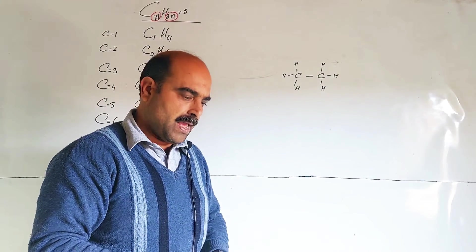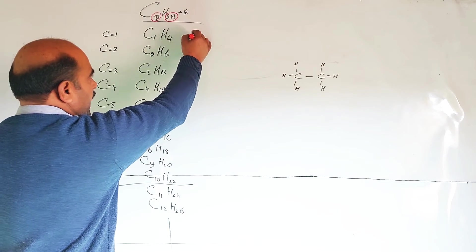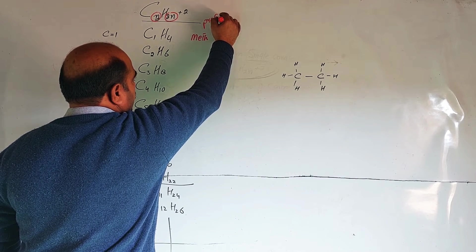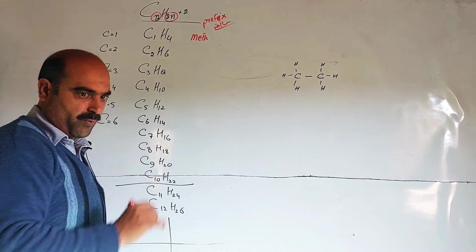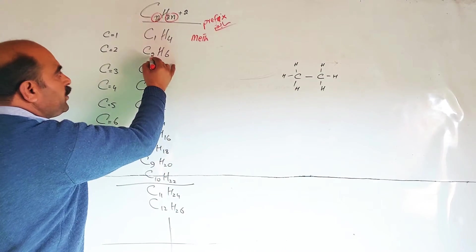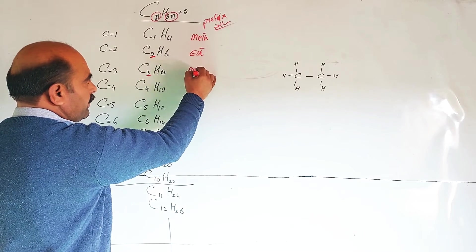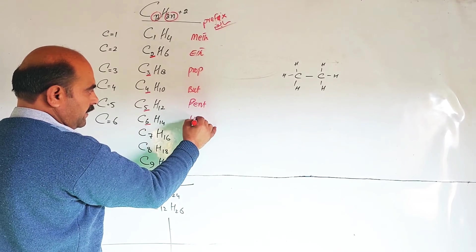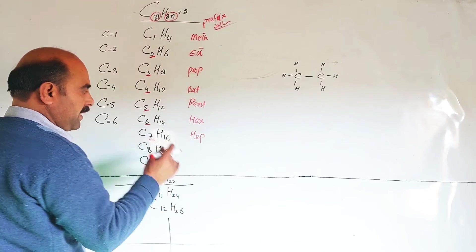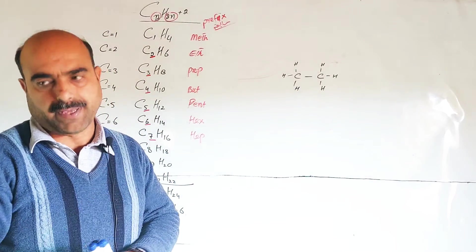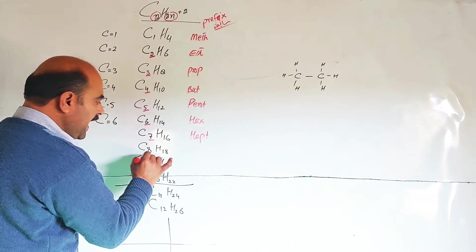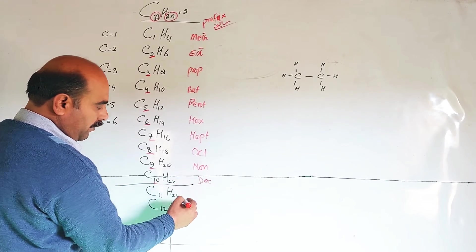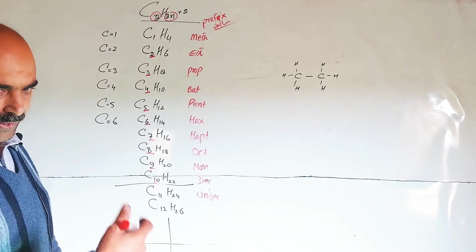The prefix indicates the number of carbon atoms — it is the beginning word of the compound name. The fourth carbon is 'but', the fifth is 'pent', the sixth is 'hex', the seventh is 'hept'. There are seven days in a week, so hept means seven. Eight carbon is 'oct', nine is 'non', ten is 'dec'. Eleven is 'undec', twelve is 'dodec', then 'tridec', 'tetradec', and so on.